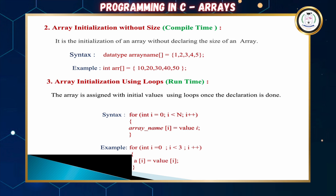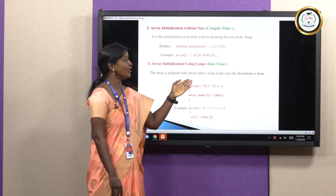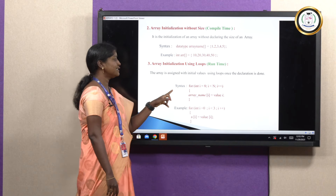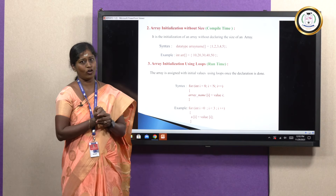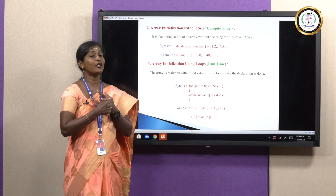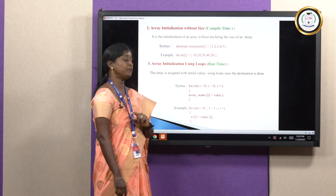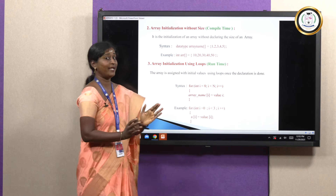The third type is runtime initialization using a for loop. The syntax is: for(int i = 0; i < n; i++), then assign array_name[i] = value. Initially we know the for loop requires an initial value, a limit, and an increment or decrement of i.